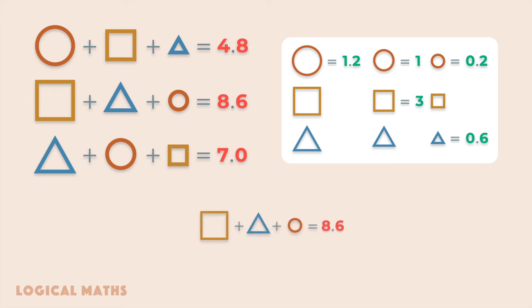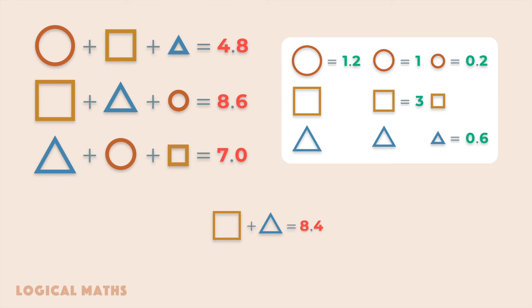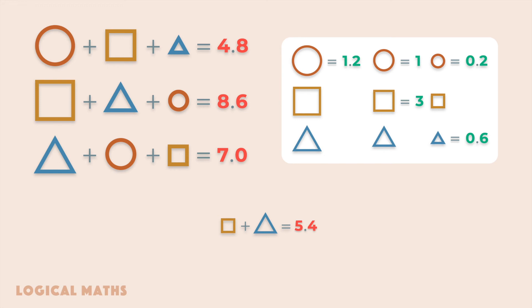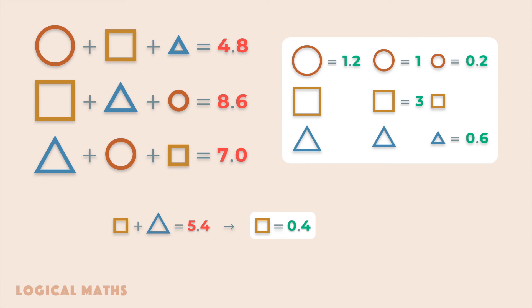Let's take a look at the second equality. We can replace the small circle with its value. Then we get that large square plus medium triangle equals 8.4. We can replace the large square with the sum of medium and small squares, and substitute the known value of the medium square. So small square plus medium triangle equals 5.4. Therefore, the small square represents the number 0.4 and the medium triangle represents the number 5.